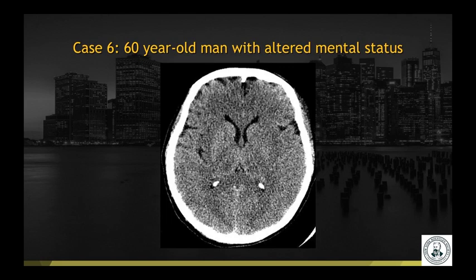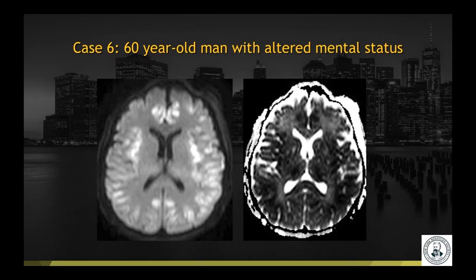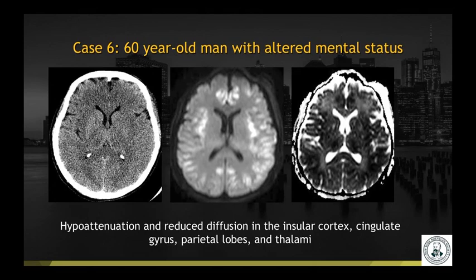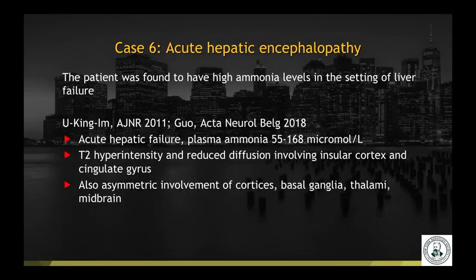Case number six: a 60-year-old man with altered mental status. Non-contrast head CT, diffusion, and ADC map demonstrate hypoattenuation and reduced diffusion involving the insular cortex bilaterally, cingulate gyri, parietal lobes, and thalami. This was a case of acute hepatic encephalopathy; the patient was found to have high ammonia levels in the setting of liver failure. This imaging distribution has been described in the literature, although you can also have asymmetric involvement of other areas of the cortex, the basal ganglia, thalami, and midbrain.